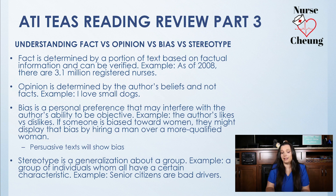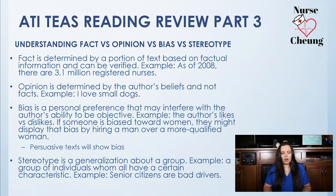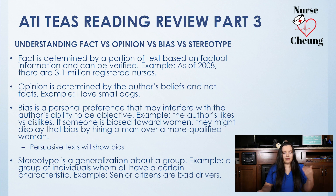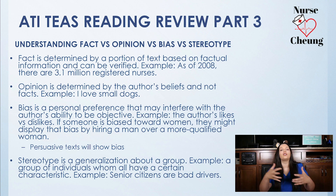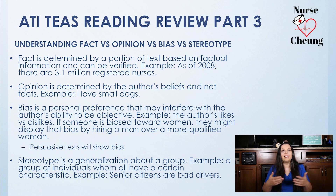We also have biases versus stereotypes. A bias is a personal preference that may interfere with the author's ability to be objective — for example, an author's likes or dislikes. If someone is biased towards women, they might display that bias by hiring men who are not as qualified as women. A stereotype is a generalization about a group — for example, 'senior citizens are bad drivers' is considered a stereotype. These are things you're going to see on the ATI TEAS.